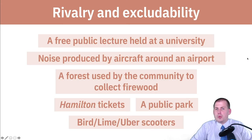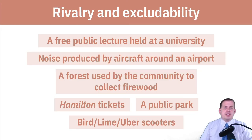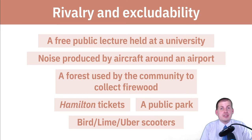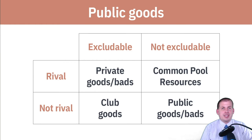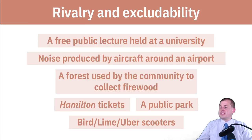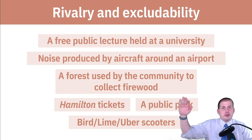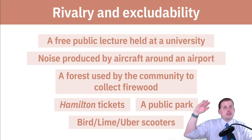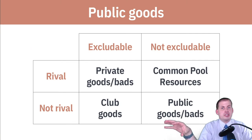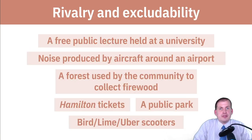Now pause the video and classify a list of goods and services. Determine whether each is excludable or rivalrous, then identify whether it's a public good, private good, common pool resource, or club good. Use the matrix — excludability on one axis, rivalry on the other — to categorize each example. Write down your answers before continuing.